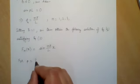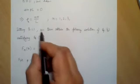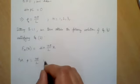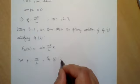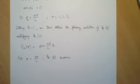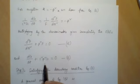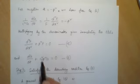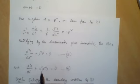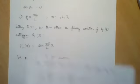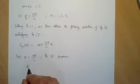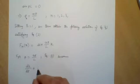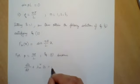For p equal to nπ/l, equation number six becomes: putting p equal to nπ/l, this becomes n²π²/l². Multiplying by c², we call this whole term λ_n², so we can write this as dg/dt + λ_n²·g = 0.